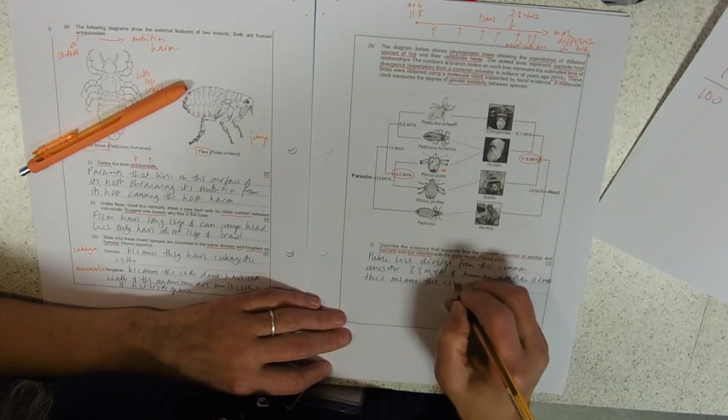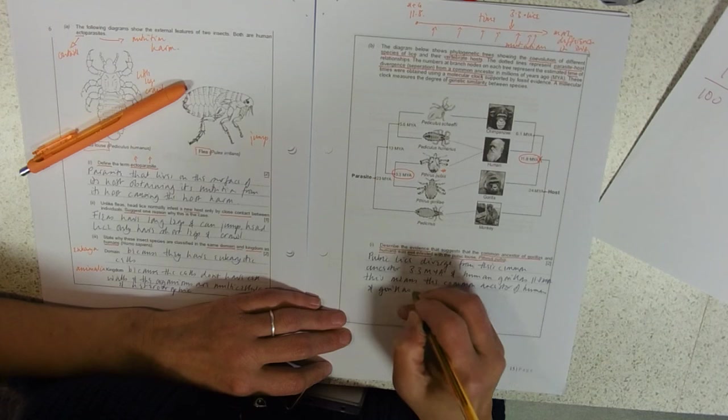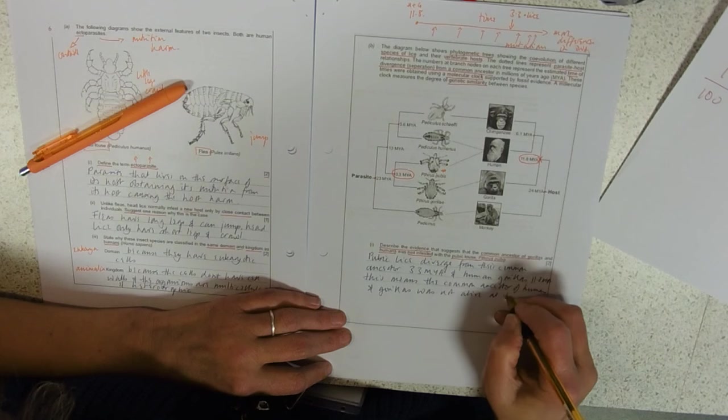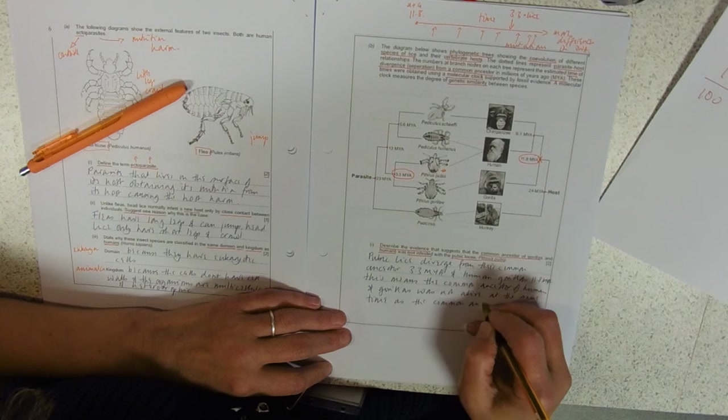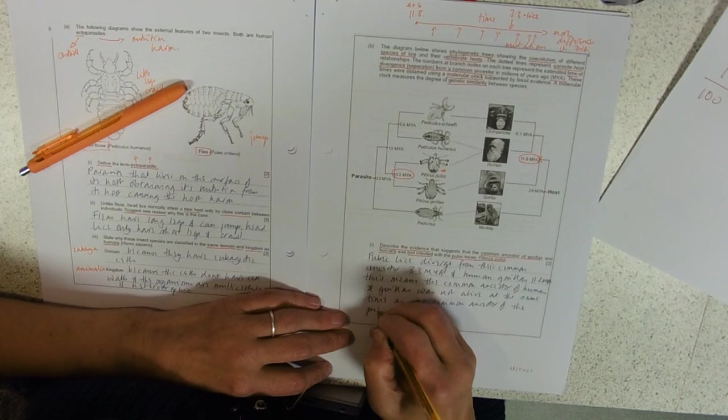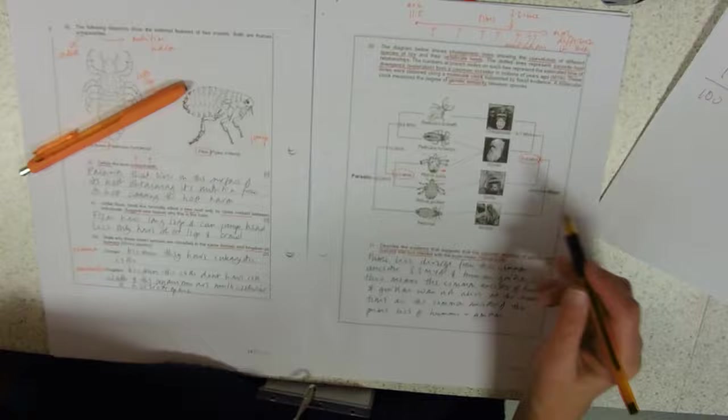As the common ancestor of the pubic louse. And again, putting the numbers on means you've referred to the data, always worth a mark.